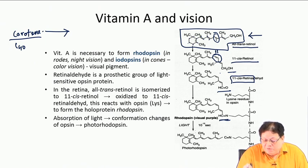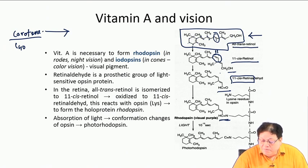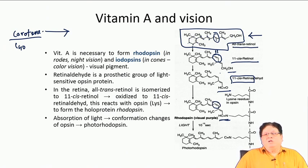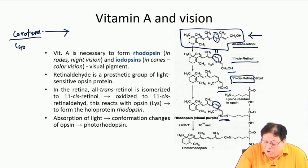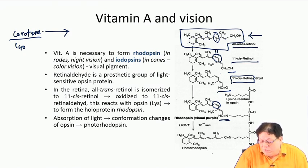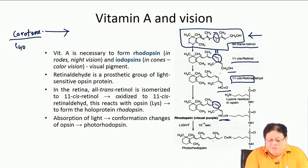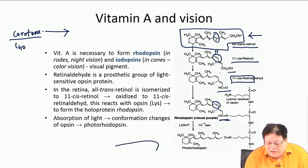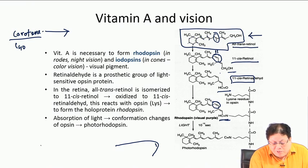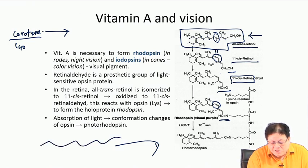As light falls on rhodopsin, there is a change in configuration of the double bond — the 11-cis double bond goes into the 11-all-trans form. This means there is a change in the geometry of the molecule: the cis form gives a bent arrangement, while the trans form gives a flat, straight chain.